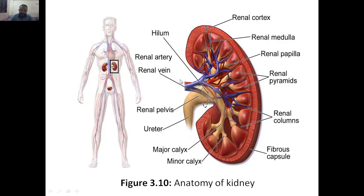This is the anatomy of the kidney. We have different parts here — you can screenshot and study. These are the different parts: renal cortex, renal medulla, renal papilla, renal pyramids, and renal columns which are the blue structures in between. There is also a fibrous capsule surrounding the whole structure. Then we have minor calyx and major calyx — this branches into minor and major calyx. We have the ureter which enters the kidney, and the renal pelvis.